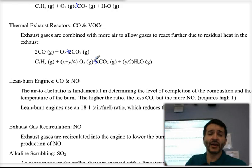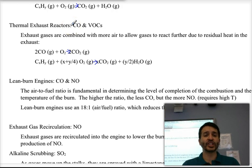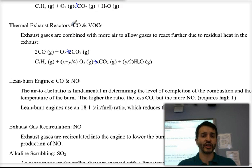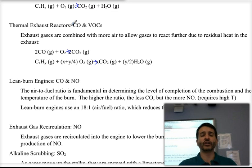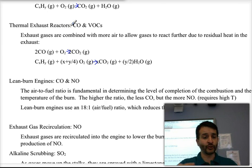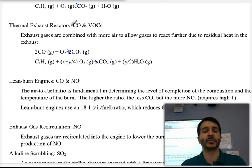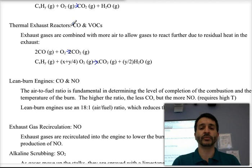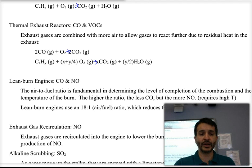This happens by having a second chamber in the exhaust where the exhaust gases come in. We inject more air and allow a second combustion. This does not release energy useful for the engine, but it does minimize the amount of pollution that is produced.